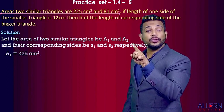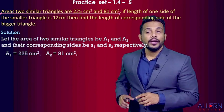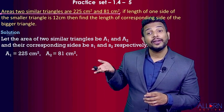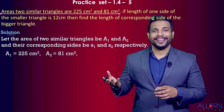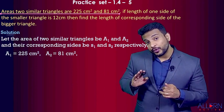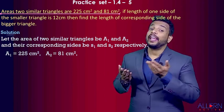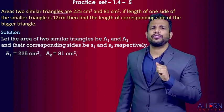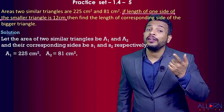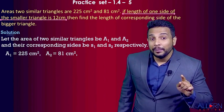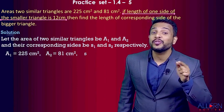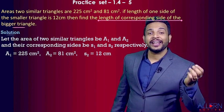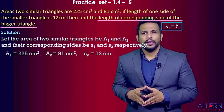The areas of two similar triangles are 225 cm² and 81 cm², so a1 = 225 cm² and a2 = 81 cm². From the areas, a1 represents the bigger triangle and a2 the smaller triangle, so s1 is the side of the bigger triangle and s2 is the side of the smaller triangle. The length of one side of the smaller triangle is 12 cm, so s2 = 12 cm.